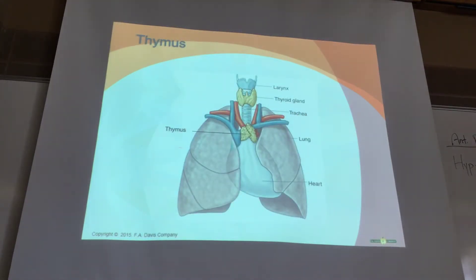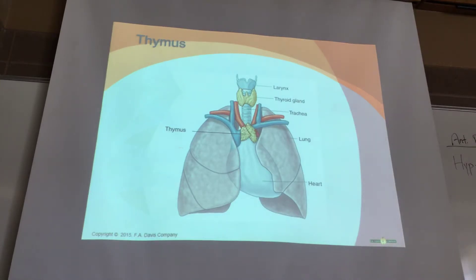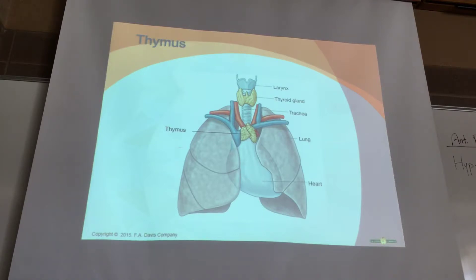The thymus lies in the mediastinum, just beneath the sternum. It's really big in children and really small in adults—typically made up of fat and fibrous tissue by the time we're old. The hormones released by the thymus are thymazine and thymopoietin, which each have a role in developing the immune system. Because it secretes hormones, the thymus is part of the endocrine system, but because its influence is on immunity, it's also part of the immune system.